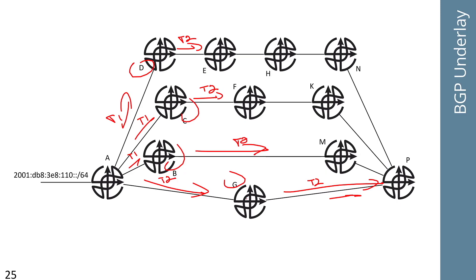Now at T3, M is going to advertise the withdraw, and F is going to advertise a withdraw, and E is going to advertise a withdraw. P is going to receive the withdraw from M and go, wait, what do I do now? So it's going to flip over to using K as its best path. At T4, K advertises the withdraw, H advertises the withdraw to N, P receives the withdraw from K and says, what do I do? It flips to its next best path, which is through N. At T5, N now advertises the withdraw, P realizes it has no route.